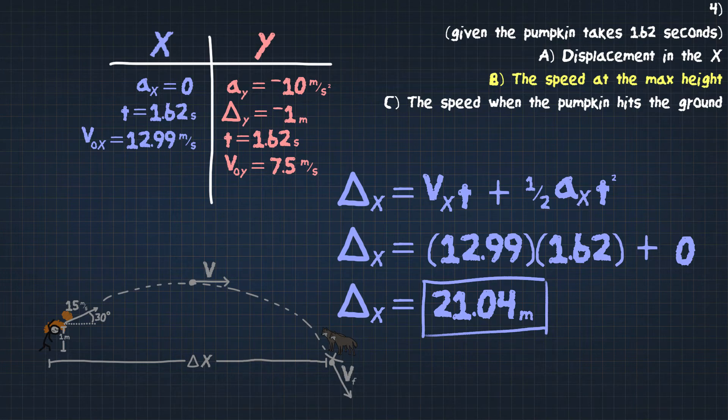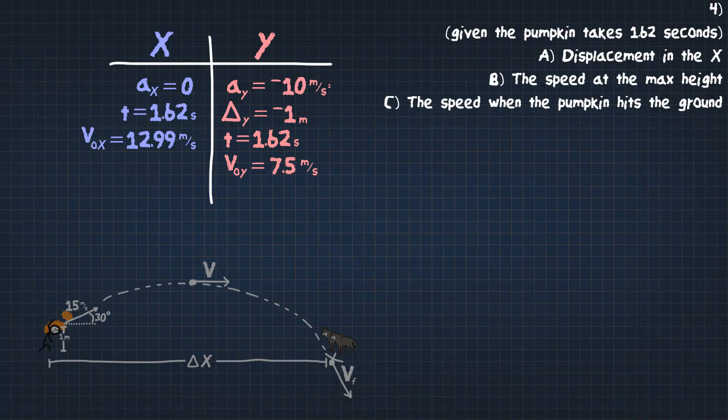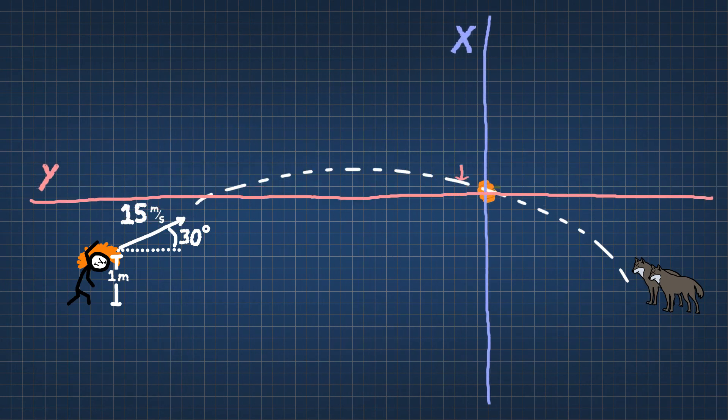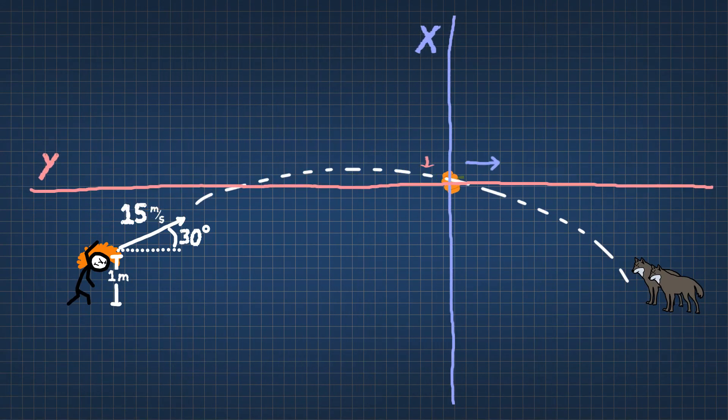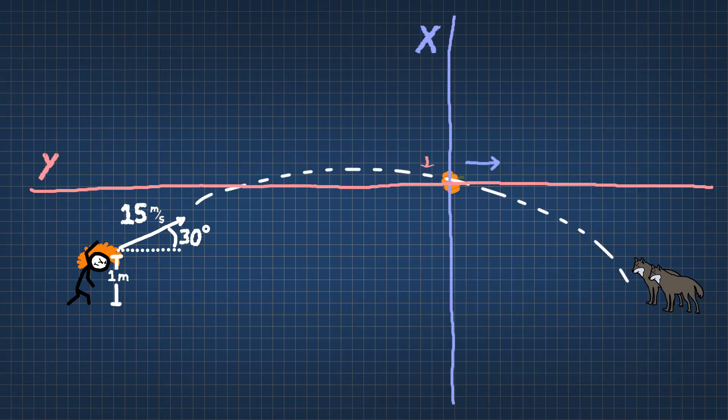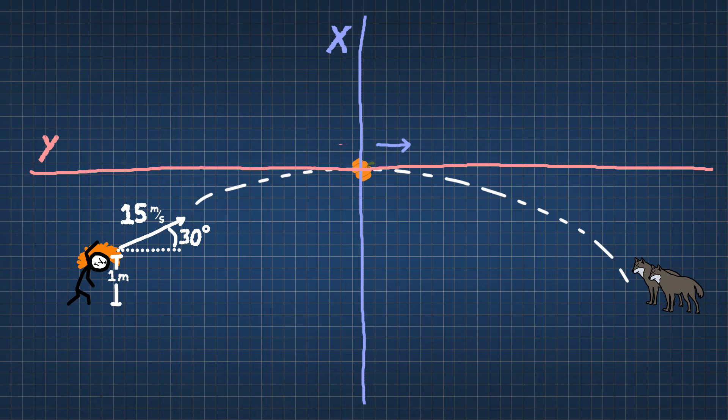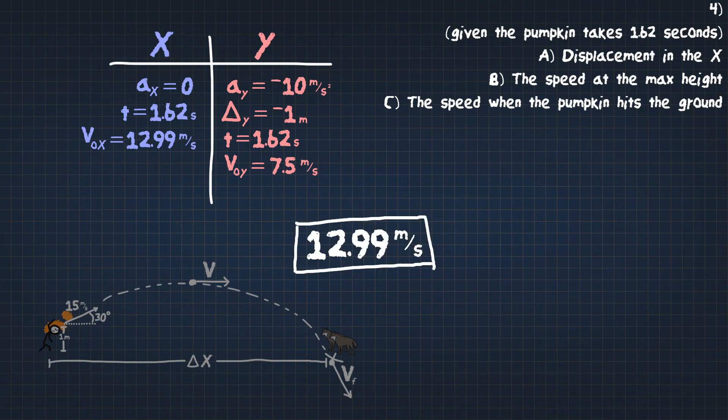This gets thrown, the maximum height let's say is around here. So this is where it gets a little bit interesting. The pumpkin is going to be slowing down as it goes up, and as it goes down, it's going to be speeding up. But in the x direction, remember there is no acceleration in the x direction. So what that means is the velocity is going to be constant throughout the whole thing in the x direction. If at the very top, the velocity in the y direction is zero, that means the velocity in the x direction is the only velocity at the very top. So the speed at the maximum height, the velocity in the y is zero, but the velocity in the x is 12.99 meters per second. So the speed at the top is 12.99 meters per second.